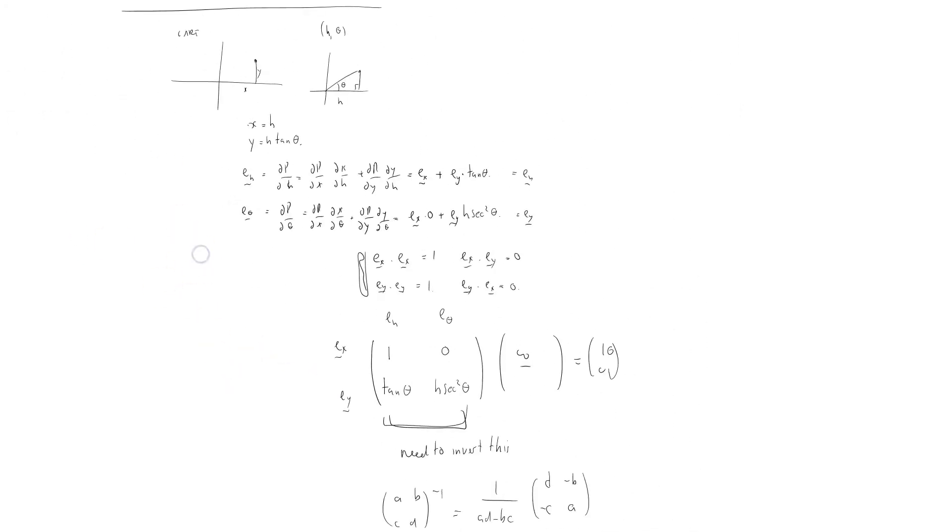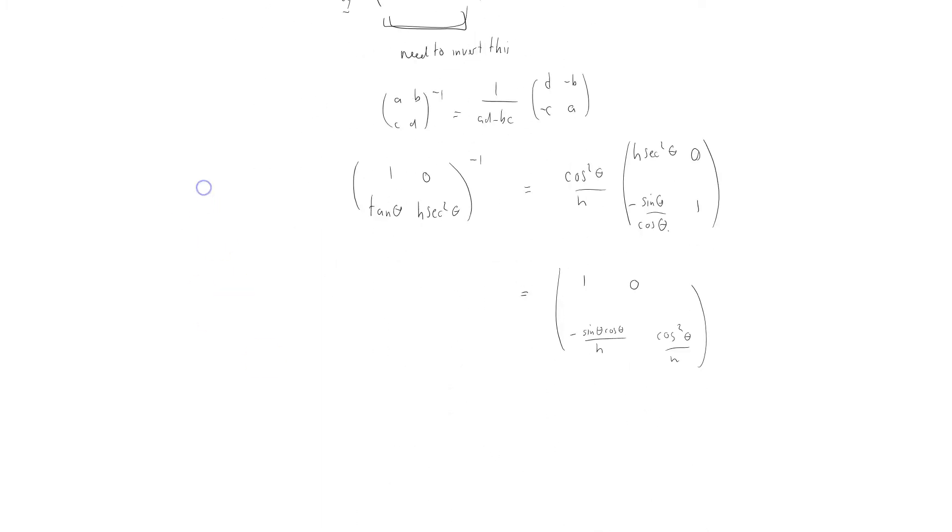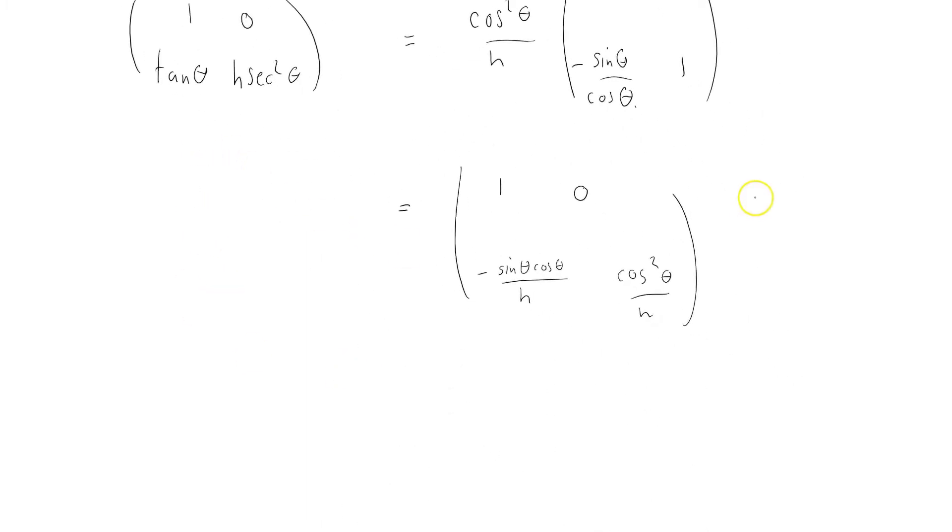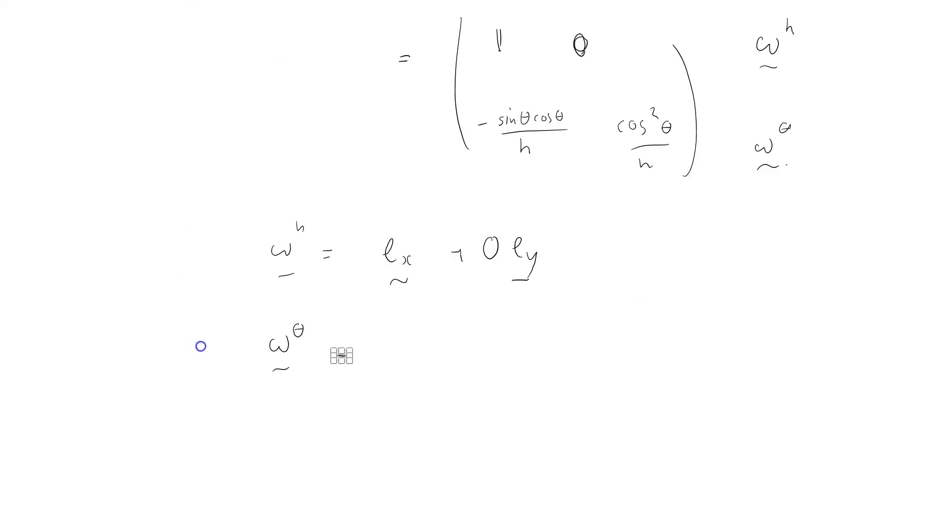From this we can quite easily see, looking at the structure of these relationships here, that we can see there's the omega h and there's omega theta. So omega h equals e_x plus 0 e_y because of that 0 there. And omega theta equals -sin θ cos θ/h e_x plus cos²θ/h e_y.